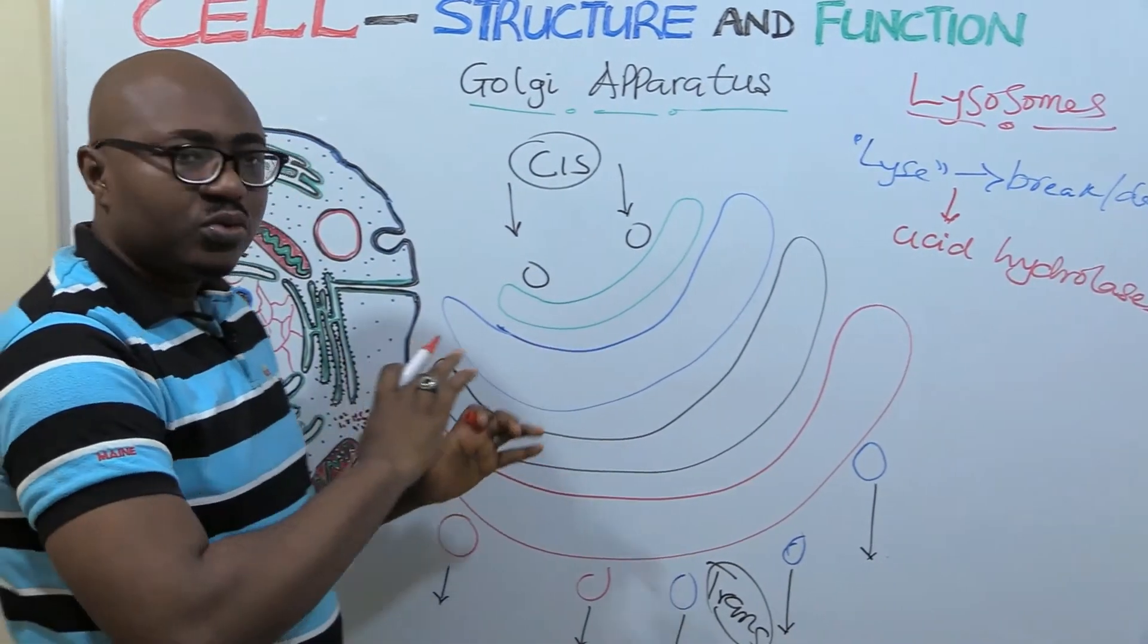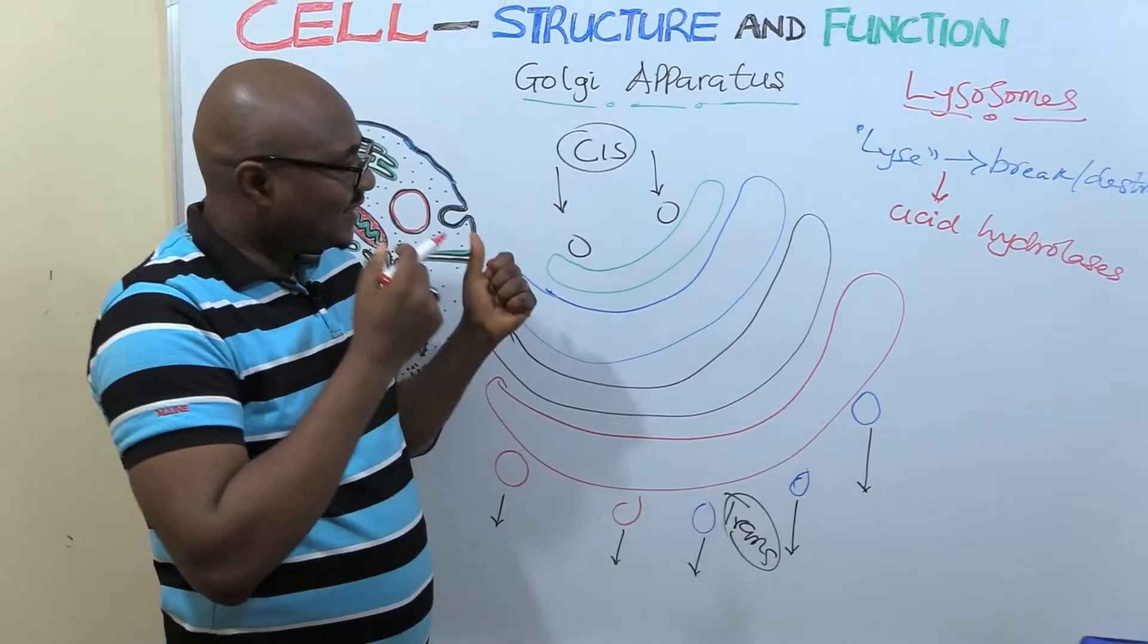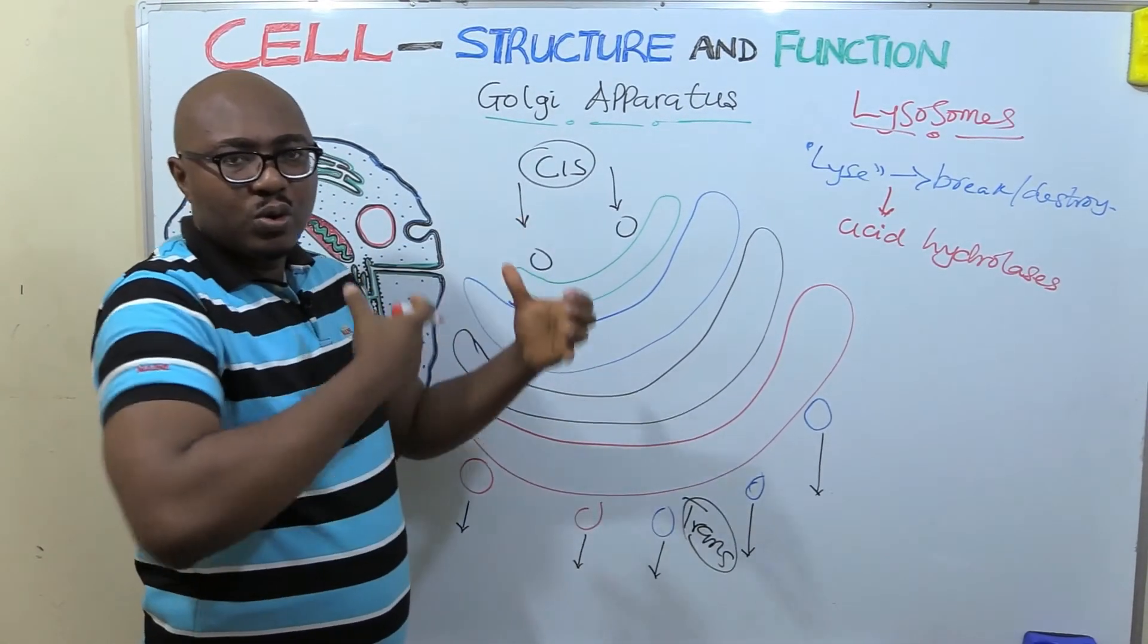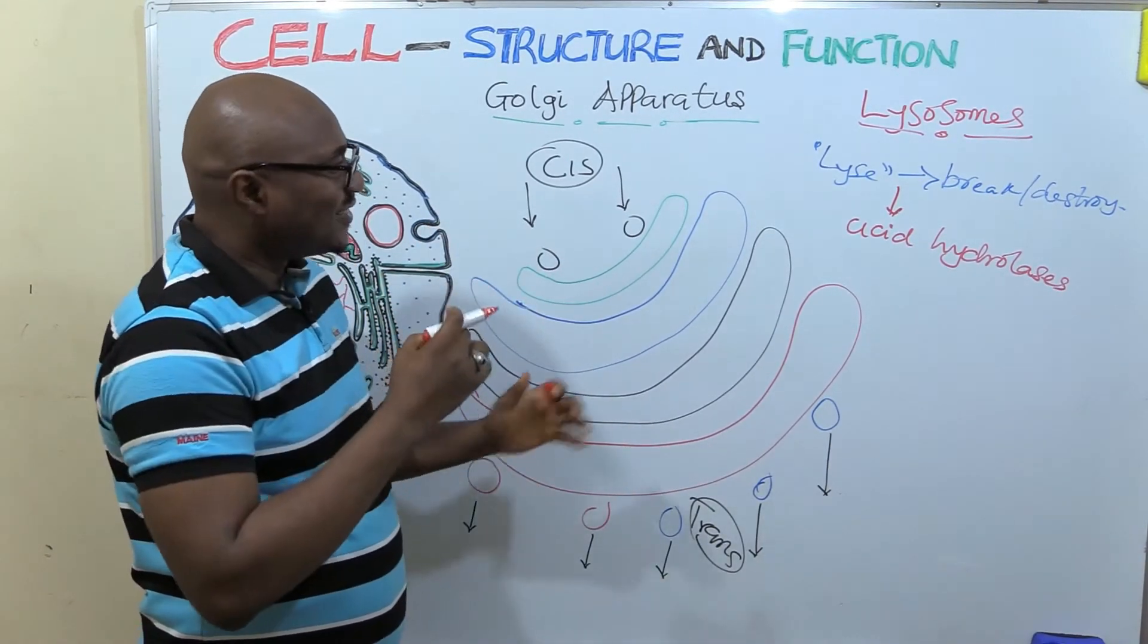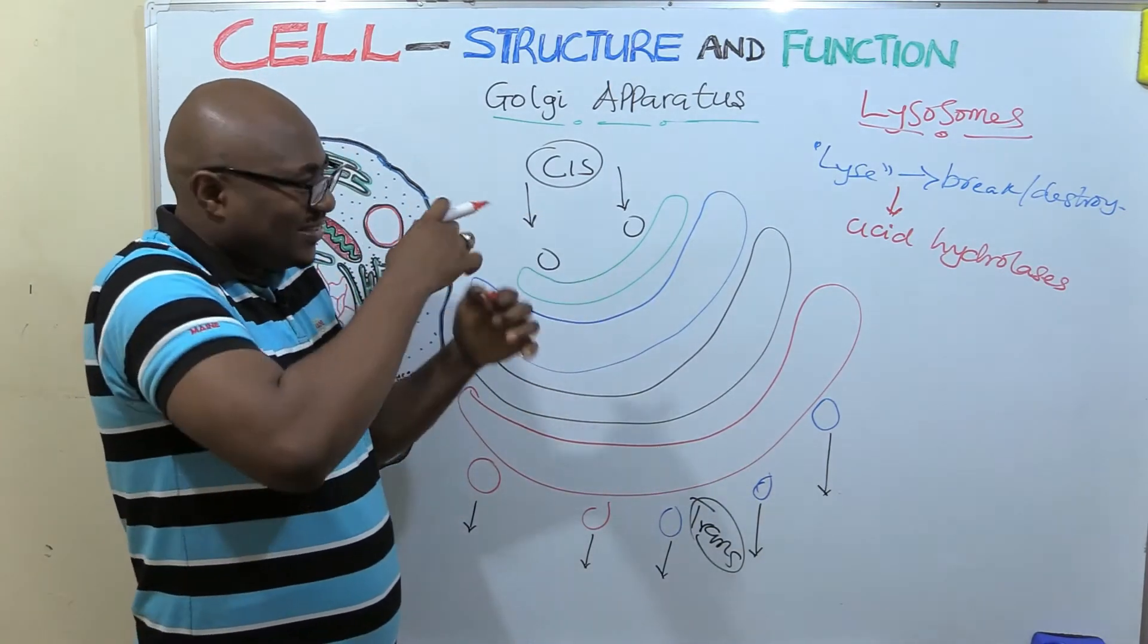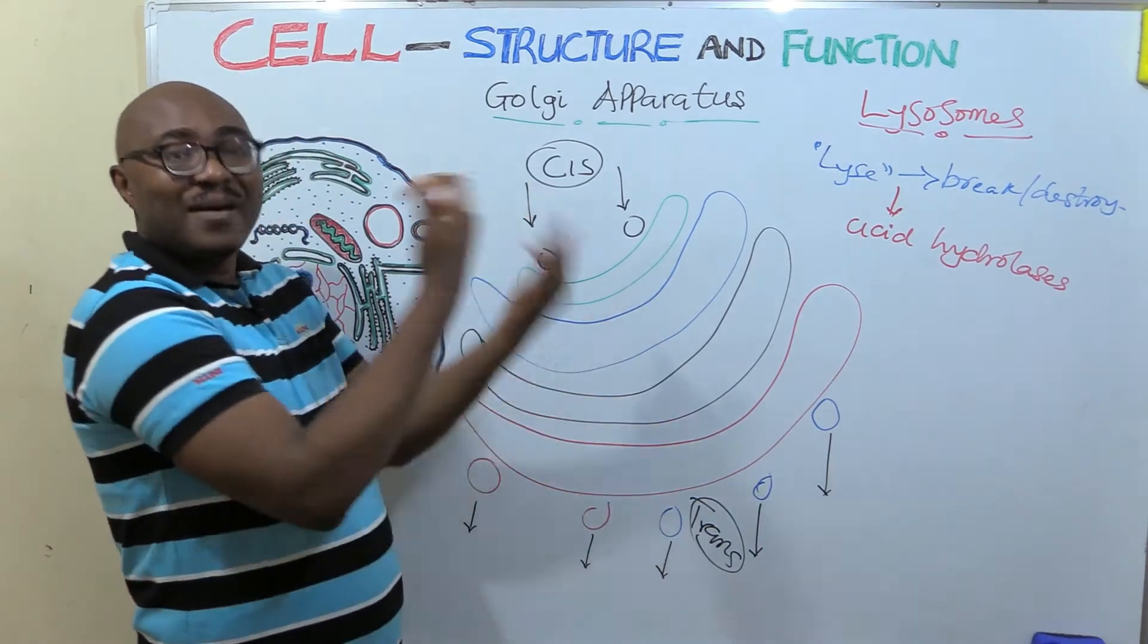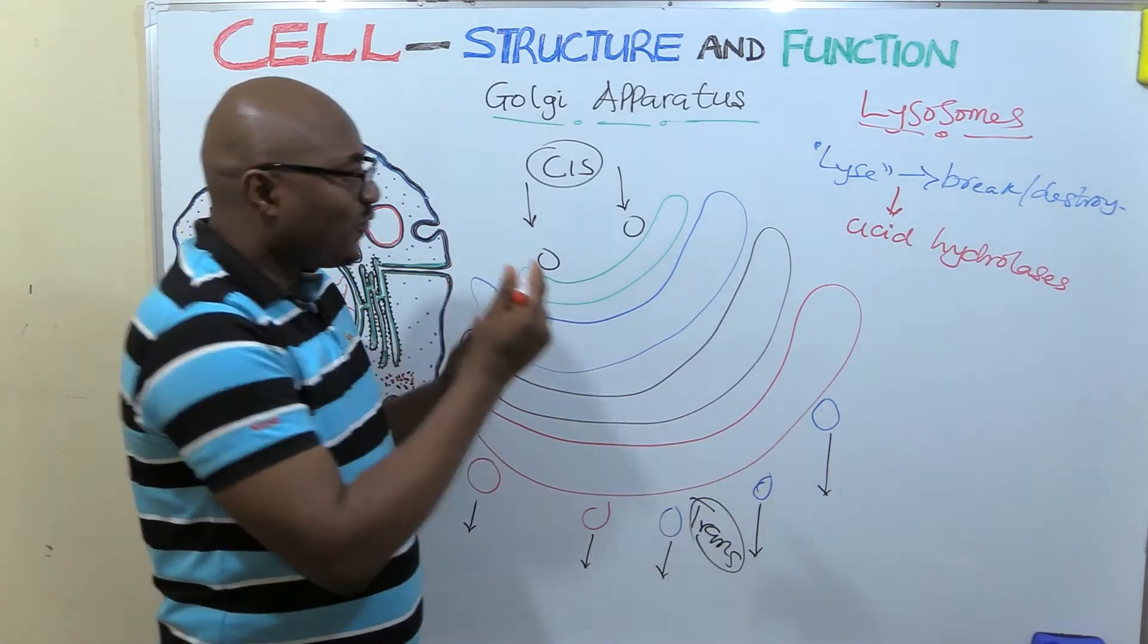So what they do is that they ingest and digest and eat up unwanted cell organelles. You know, some cell organelles as they grow, they become old and they are worn out. So they need to be destroyed. So they are destroyed in this lysosome. It eats them up, destroys them through this acid hydrolysis, then spits them out, breaks them into very simple substances that can be reused. That's what it does. It's called autophagy.